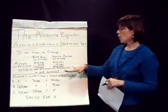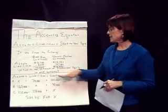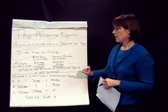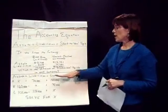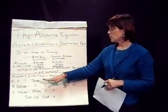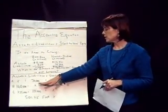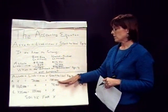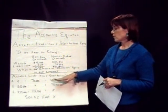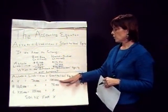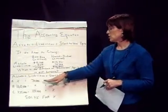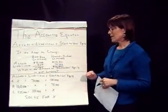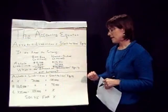Let's step it up a little bit. If we know what one of these categories are, we can figure out the others. So if we know our liabilities are $70,000 and our stockholders' equity is $120,000, and assets equal liabilities plus stockholders' equity, all we need to do is add $120,000 plus $70,000 to give us $190,000 in assets.